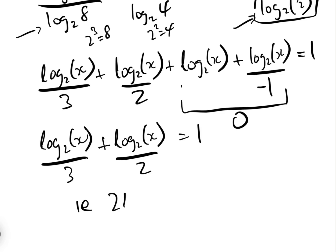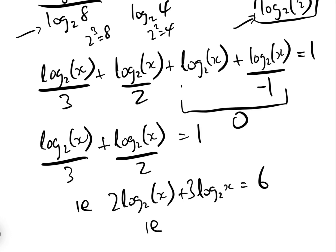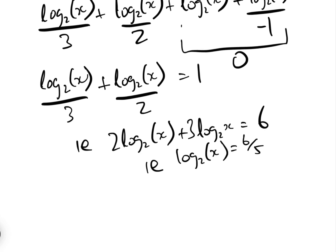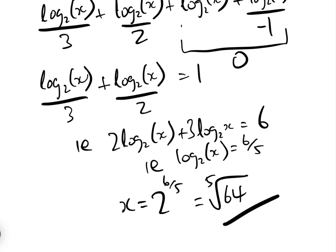Multiplying everything by six, we get two times log to the base two of x plus three times log to the base two of x equals six, i.e. five times log to the base two of x equals six, so log to the base two of x equals six over five. Therefore x equals two to the power of six over five, or equivalently the fifth root of 64. That is the answer.